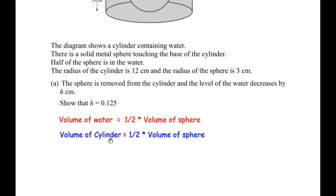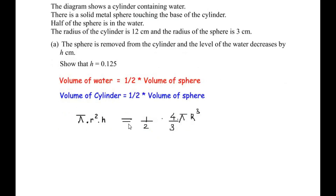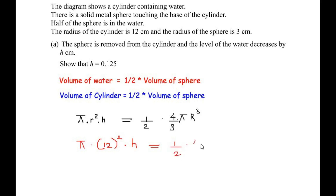Let us write down the respective formulas. The volume of the cylinder is π r² h, and the volume of the sphere is (4/3)π r³. So the equation becomes: π × 12² × h = (1/2) × (4/3) × π × 3³. The radius of the cylinder is 12 cm and the radius of the sphere is 3 cm, so we substitute those values in.